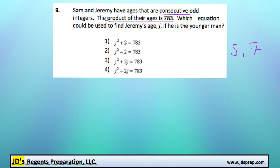So we're going to use the variable j to represent Jeremy's age. And if we multiply that with Sam's age, which we know is 2 years older, right, because it's the next consecutive odd integer.